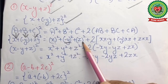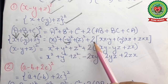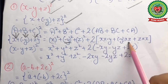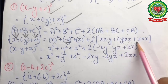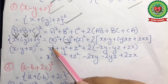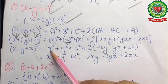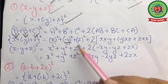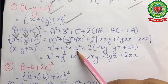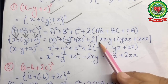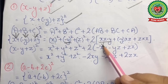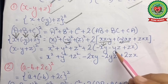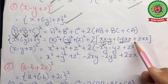The square of x is x², the square of -y is y², and the square of z is z². Then we have 2 times: x into -y gives -xy, plus -y into z gives -yz, plus z into x gives +zx.